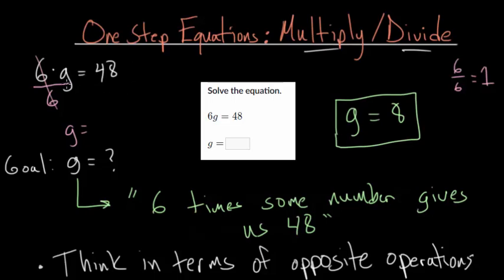What we have to do is the same thing to both sides of the equation. So we have to divide the right side by 6 as well. And that's where we get that g is equal to 8. And we know this is true because if we plug it back in, 6 times 8 does equal 48.